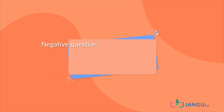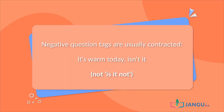Negative question tags are usually contracted. For example, "It's warm today, isn't it?" — not "is it not?"